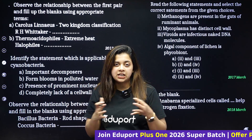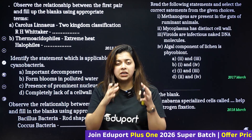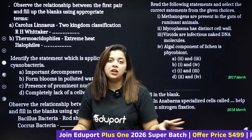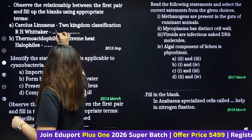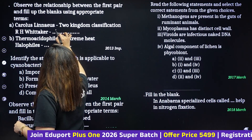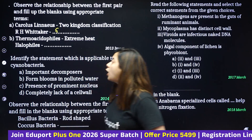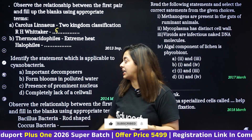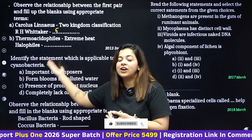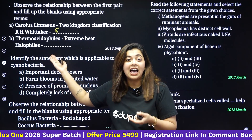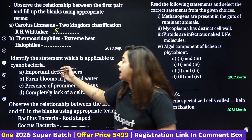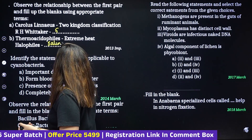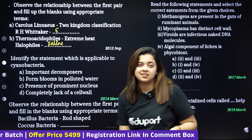If you get one mark, you will get two marks. R.H. Whittaker proposed the five kingdom classification — so the answer to that analogy is five kingdom classification.